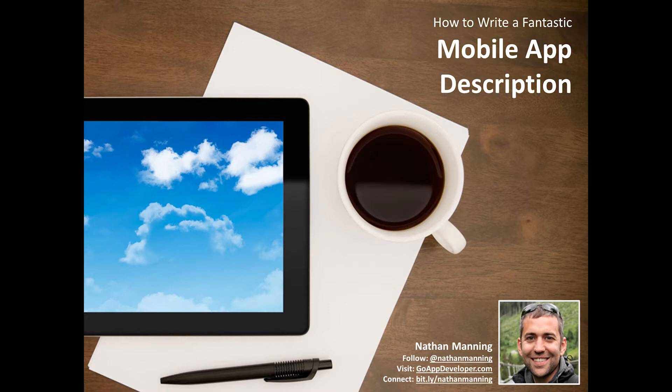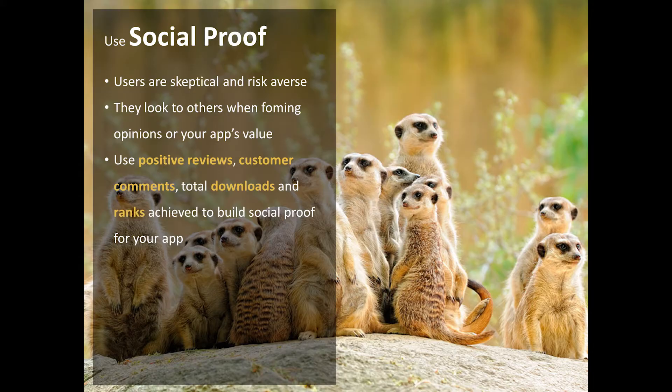The first topic I want to talk about is social proof. What exactly is social proof? It's a complicated-sounding concept which is actually very simple. It basically means that we look to other people to determine how safe we feel using a product or service. We've all seen this in everyday situations — you're walking down the street and see people looking at something; it's almost impossible not to stop and check out what they're looking at. Social proof is something you can also use in your app descriptions to get people to believe that others think your app is important.